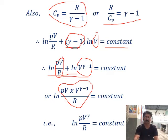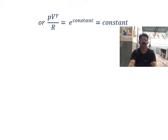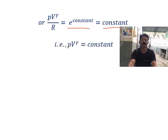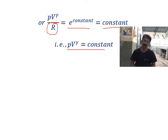Simplifying with common base V: V to the power 1 and V to the power gamma minus one combine. So ln(P times V to the power gamma minus one plus one by R) equals constant. Removing the ln term, it becomes P times V to the power gamma by R equals constant. Since R is also a constant for a particular gas, we can write PV to the power gamma equals constant for a reversible adiabatic process.